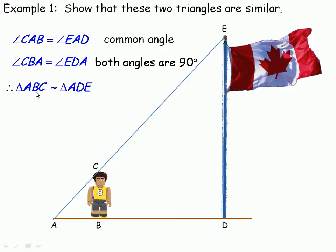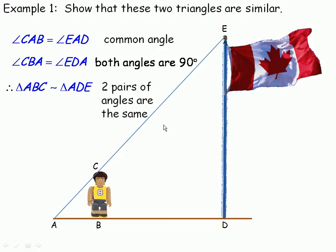We can now state that triangle ABC is similar to triangle ADE. The small triangle ABC is similar to the large triangle ADE because we have found two pairs of equal angles. If you wanted to list the third pair as well, you could say there are three pairs of equal angles, so the triangles must be similar. To show triangles are similar, one method is to show that the corresponding angles are equal.